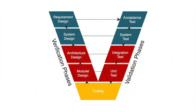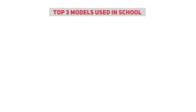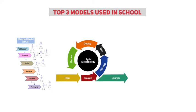The V model is a sequential model that connects each phase to the corresponding testing phase. And lastly, we have the Scrum model, which is a type of Agile model that emphasizes self-organization and teamwork. The top three models used in school are Waterfall, Agile, and Scrum.